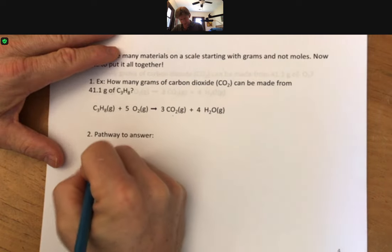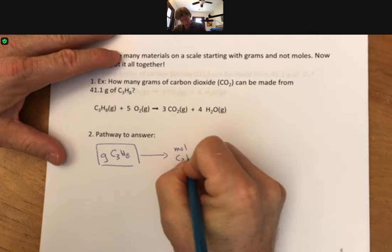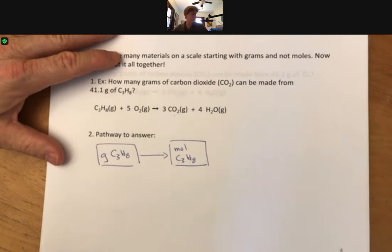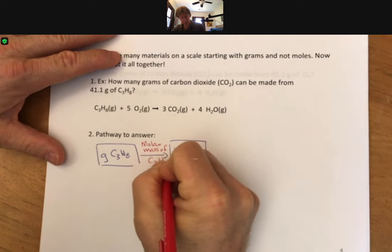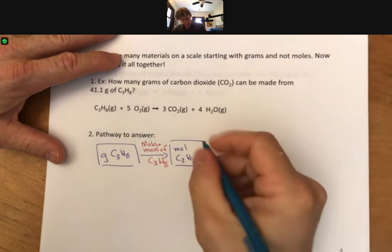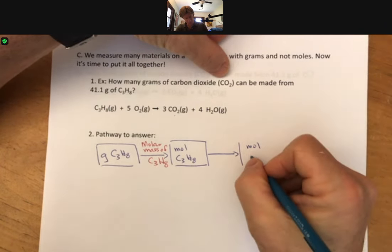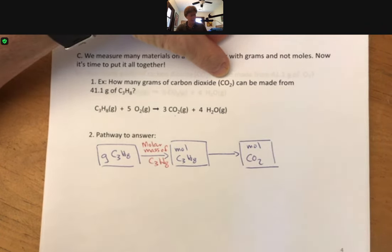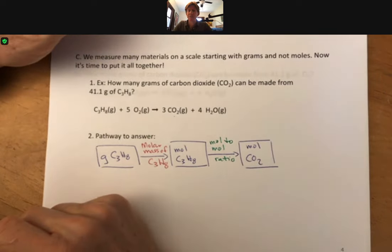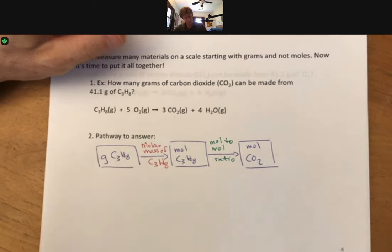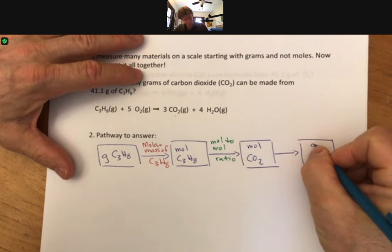And grams of just one thing, and our pathway for this answer is we're going to need to go to moles of C3H8 and to do that we're going to use the molar mass of propane. Then we're going to go to moles of something else, in this case it's moles of carbon dioxide, and to do that we're going to use the mole to mole ratio based on the coefficients of the balanced reaction. And then another molar mass going to grams of CO2.